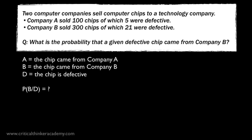Now let's write down what we know. Here are the conditional probabilities of getting a defective chip from each of the companies, respectively. You can just read these off the question. 5 out of 100 and 21 out of 300, which give us 0.05 and 0.07 when we simplify them.